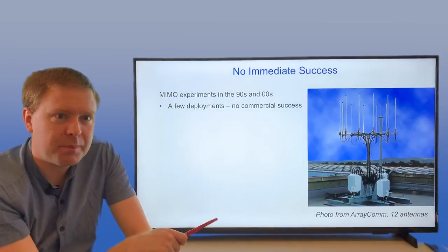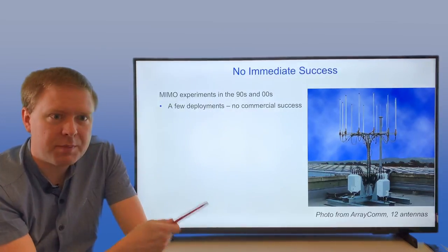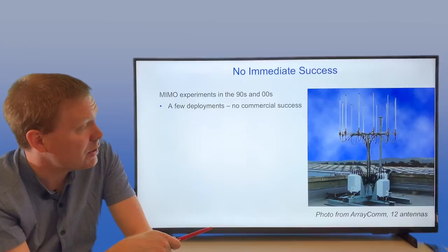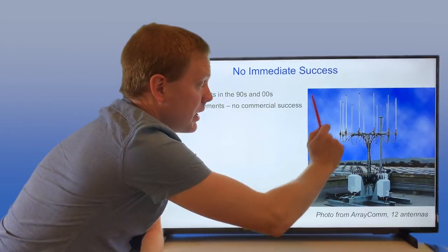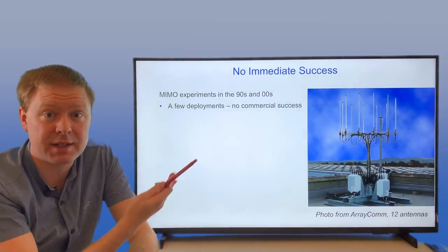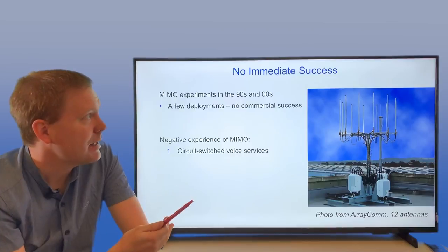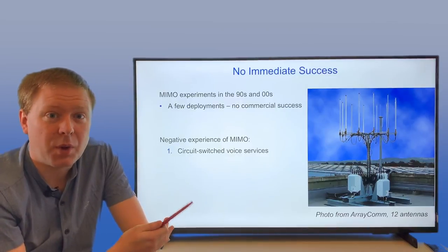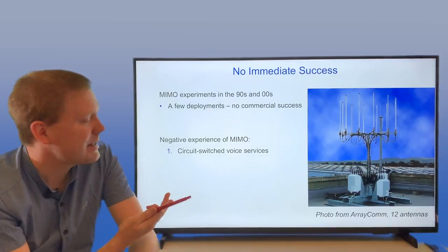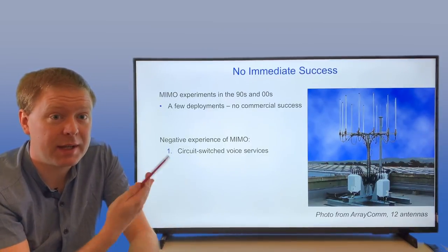There were a lot of MIMO experiments in the 90s and 2000s, and there were a few deployments, but no real commercial success. Here's a photo from Arraycom with 12 antennas put in a uniform circular array. You can still find these things in Tokyo, for example. Since it didn't become a success in the way that we were hoping, there have been some negative experiences around MIMO communications that have been building up in the community.